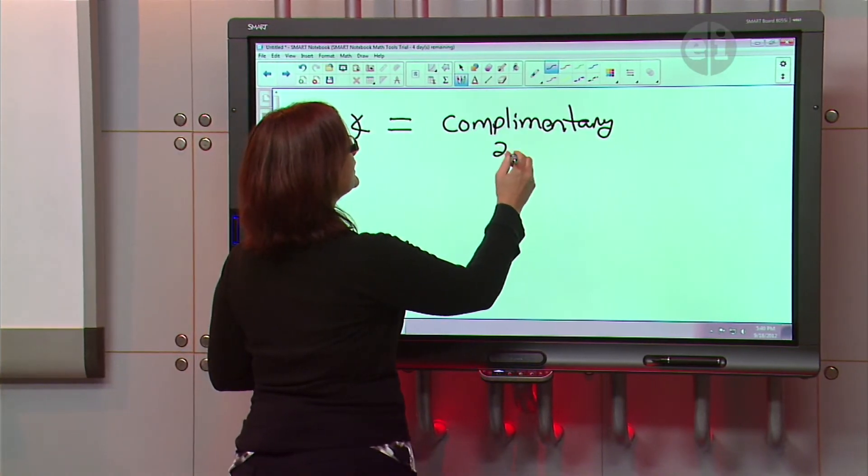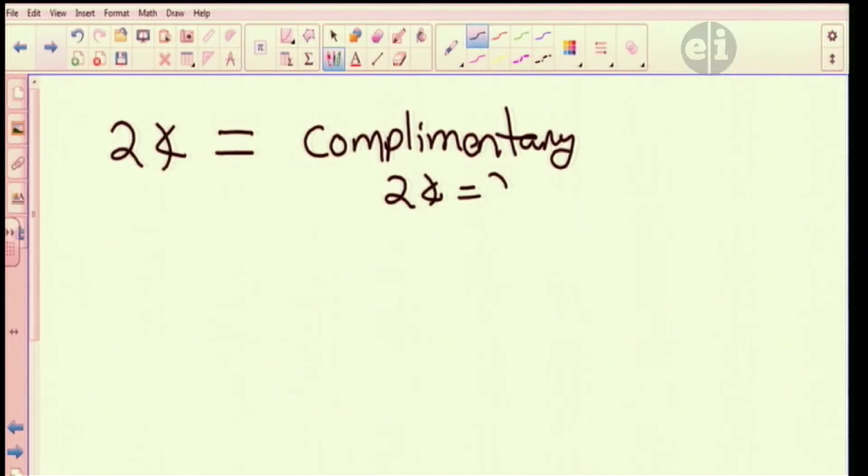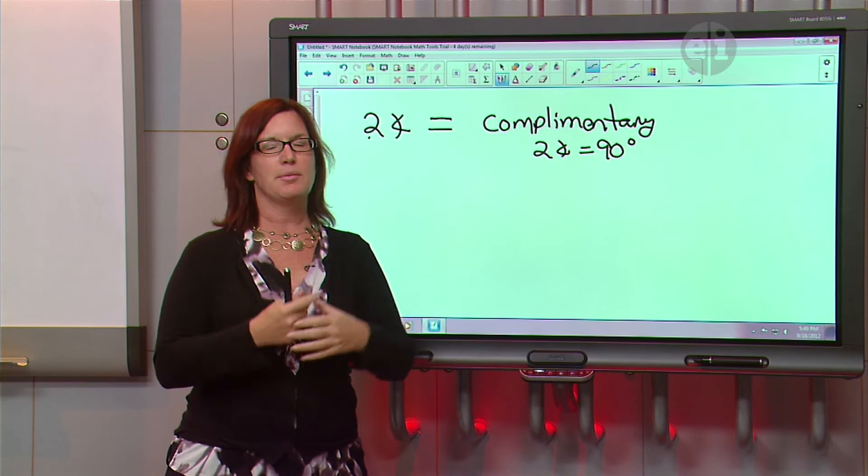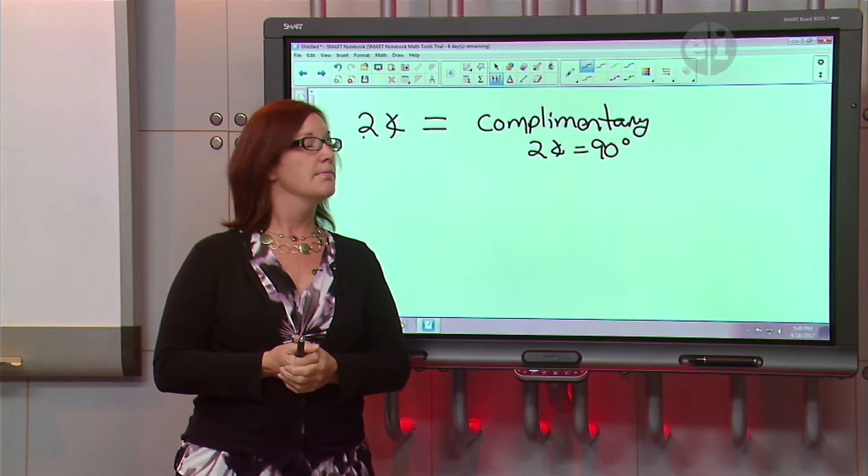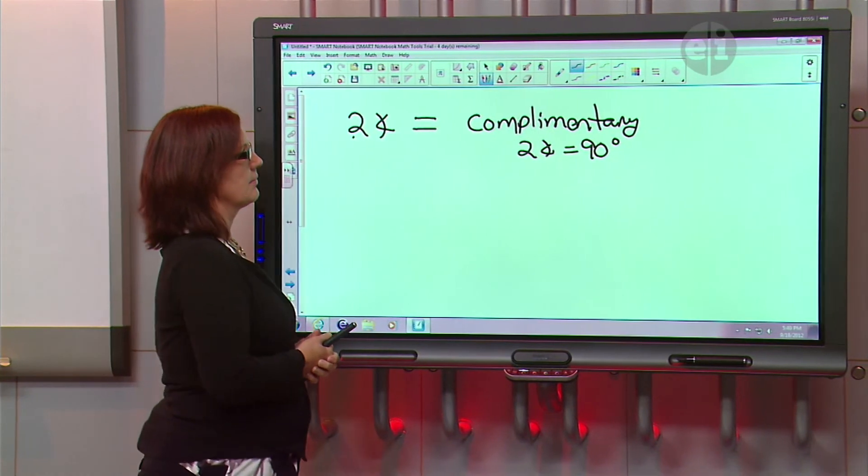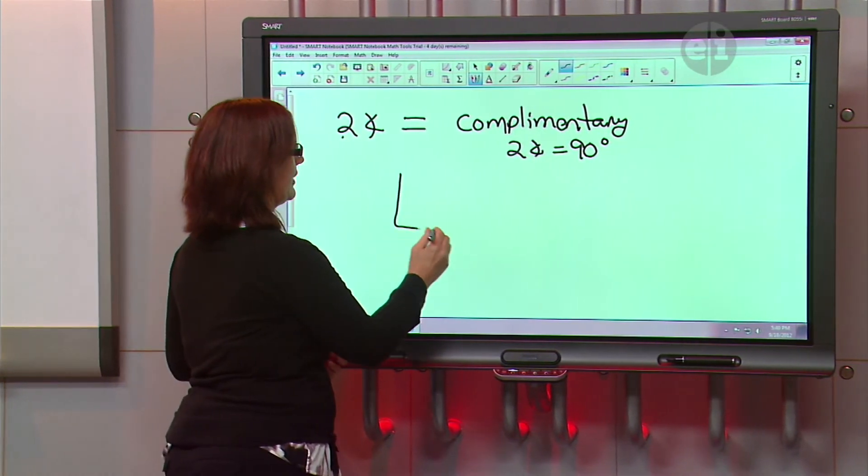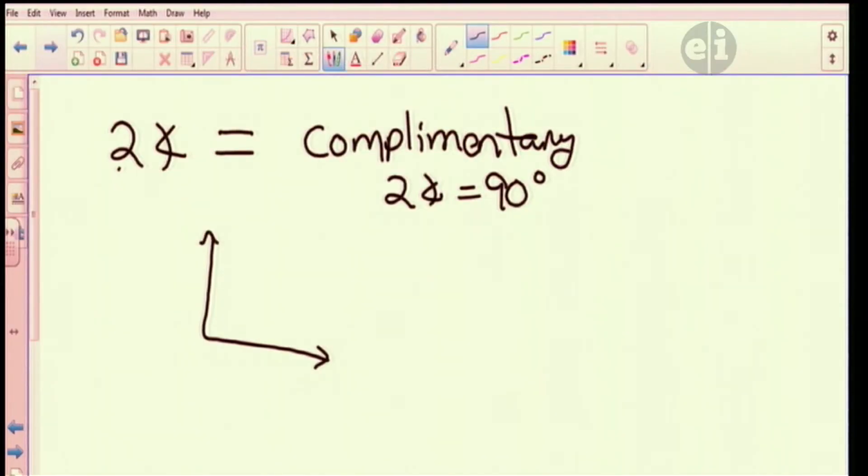So we're saying we have two angles that are going to equal 90 degrees when we add the two together. So now when we look at this, you're saying, can two angles be equal and complementary? Can you think of any time that two angles are the same and add up to 90 degrees?